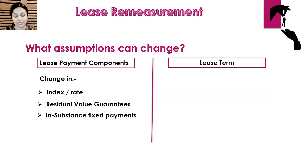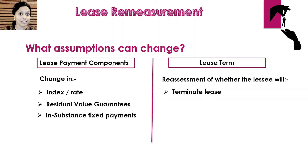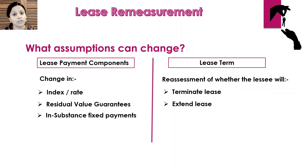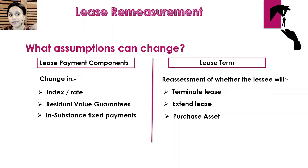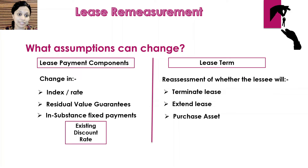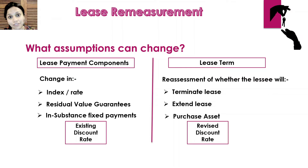Changes in lease term occur when two or three years into the lease the lessee reassesses what he would possibly do — for example, terminating the lease earlier than expected, deciding to extend the lease, or deciding to purchase the asset. In all these cases the lease payment would change and the lease liability needs to be remeasured. One important point: if there is a change in lease payment components, use the existing discount rate; but if it is a change in the lease term, use the revised discount rate.